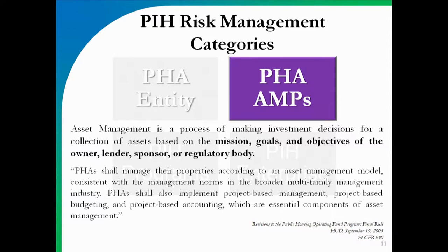It also helps us understand how that PHA fits into its community — what it does as a whole, what programs it's operating, whether it has other businesses running on the side. We'll look at this entire entity because what affects one piece will eventually affect the whole. We're also going to talk about the smallest part of the agency — the AMPs, the projects, the developments. We talk about this because it's a really great leading indicator for risk. If an agency has multiple properties and one is starting to fail, that often indicates issues later on in other areas.